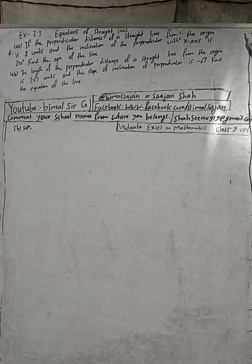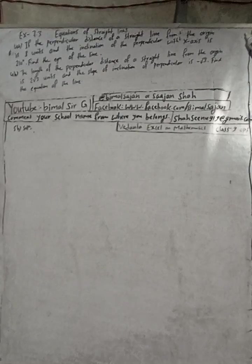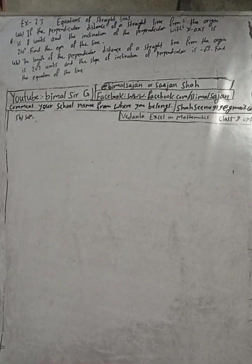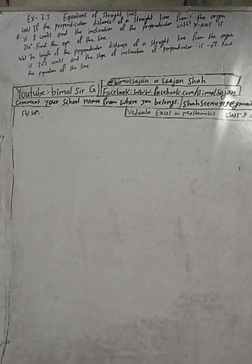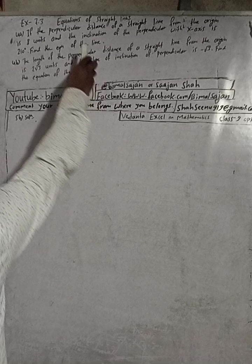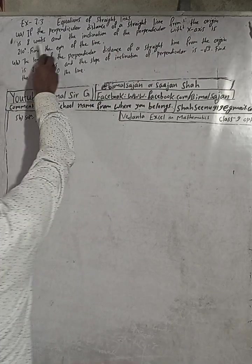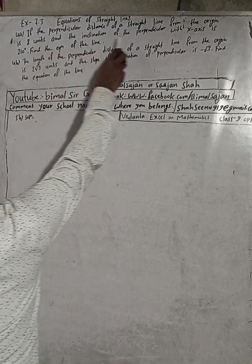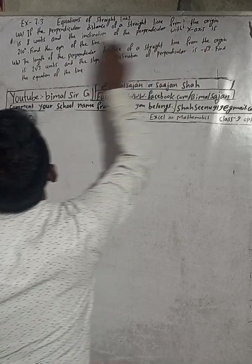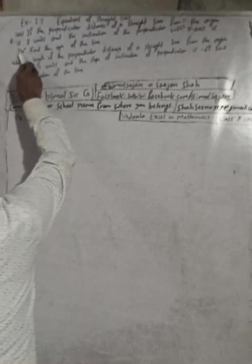Hi class 9 and 10 students, welcome back to my YouTube channel. This is question number 4a, exercise 7.3, equations of a straight line, class 9 optional mathematics. The question is: if the perpendicular distance of a straight line from the origin is 8 units and the inclination of the perpendicular with the x-axis is 210 degrees, find the equation of the line.